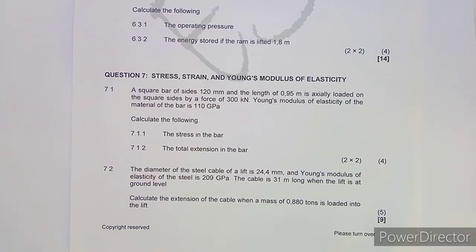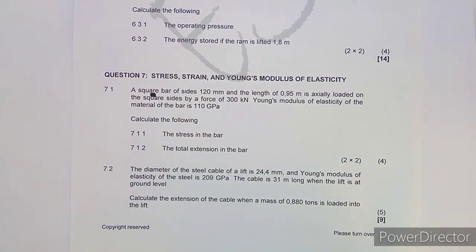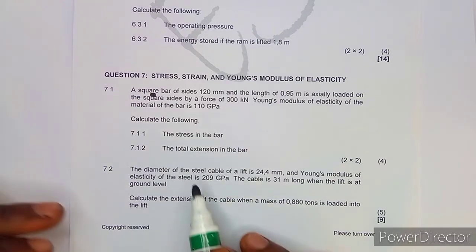If you are new, consider subscribing so you won't miss any of the classes. For question seven, we are given a square bar — take note, a square means all sides are equal — of size 120 millimeters and length 0.95 meters, loaded on the square sides by a force of 300 kilonewtons. The Young's modulus of elasticity of the material is 110 gigapascals.